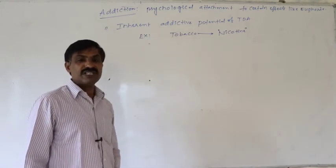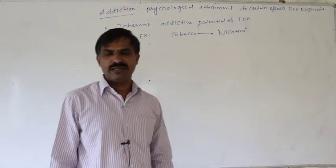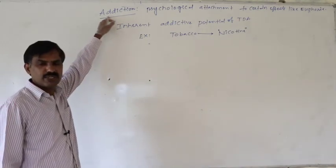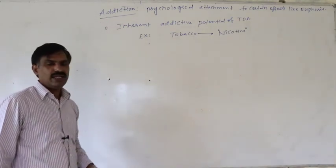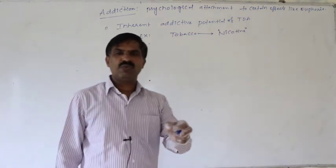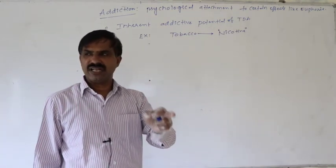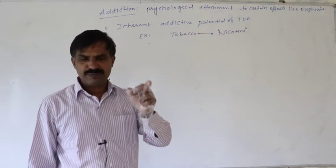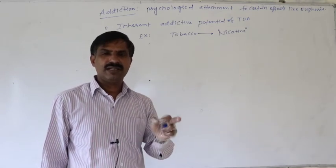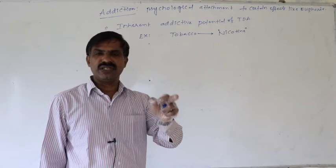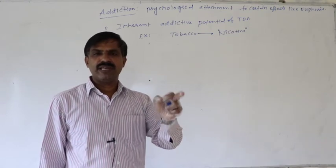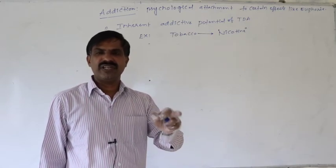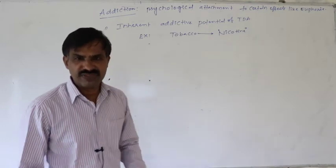Due to that, the person starts repeated abuse of cigarette smoking and finally becomes addicted to cigarette smoking. In that way, though a person abuses TDA once for curiosity, excitement, experiment, or adventure, chemical substances released into the body induce the brain to repeatedly abuse TDA. By that way, finally that leads to addiction — that is the first reason.